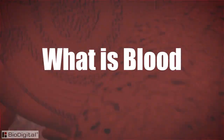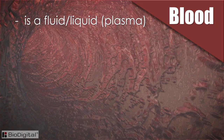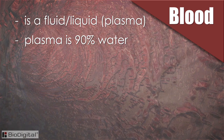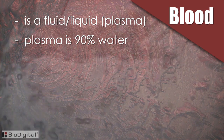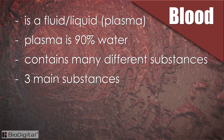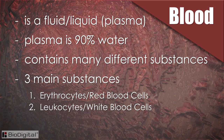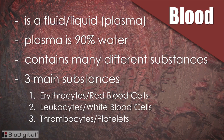Now that we have an understanding of how blood moves throughout the body, we can discuss what it actually is. Blood is a fluid known as plasma. Plasma is made up of ninety percent water, which is why drinking a sufficient amount of healthy water is absolutely necessary. Blood contains many substances, but the three main types of blood cells are erythrocytes, known as red blood cells; leukocytes, known as white blood cells; and thrombocytes, which are the platelets.